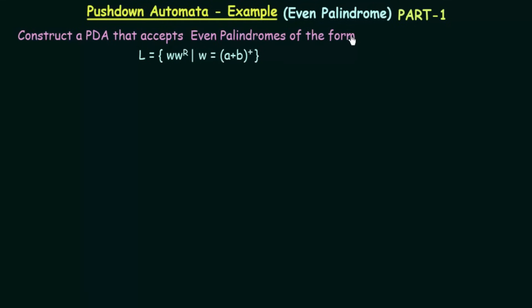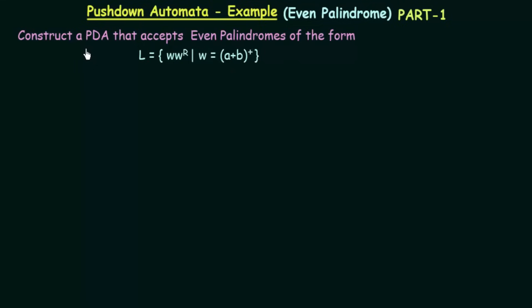This example is about even palindromes. The question says: construct a pushdown automata that accepts even palindromes of the form L = WW^R, for all W belonging to the positive closure of (A + B). Before we understand what this language means, keep in mind that we are going to construct a non-deterministic pushdown automata for this.